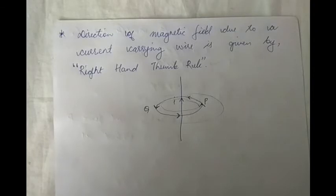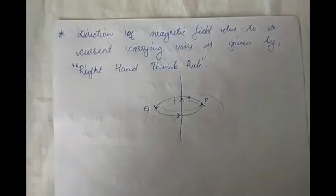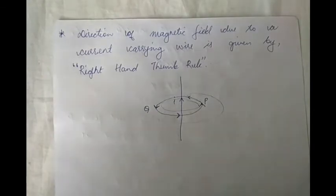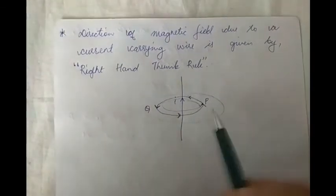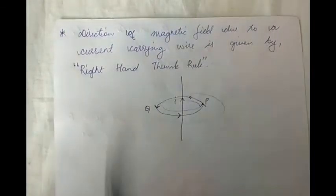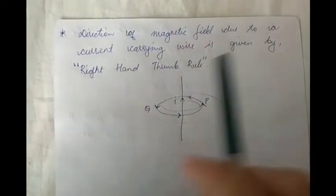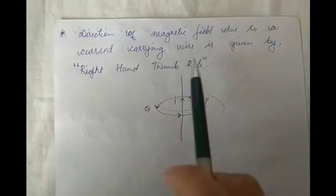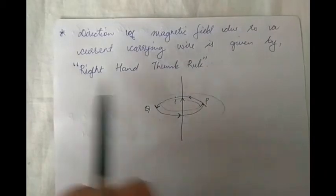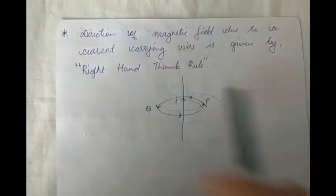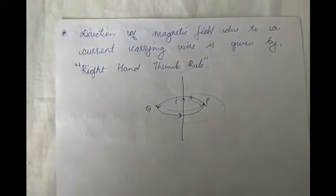Due to a particular current-carrying wire, the magnetic field intensity extends up to infinity — theoretically, of course, which is not possible in reality. Now, what I want to discuss here is the direction of the magnetic field intensity. Remember, the direction of the magnetic field intensity due to a current-carrying wire is given by the right-hand thumb rule.